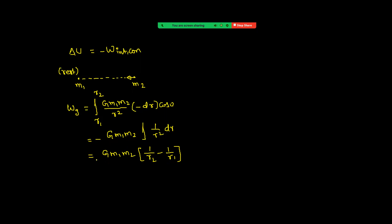This is the work done by gravitational force, which is the internal force. And this is equal to negative of change in potential energy. So I am writing here: delta U, which is U(R2) minus U(R1), is equal to negative of minus G·M1·M2 into (1/R2 minus 1/R1).